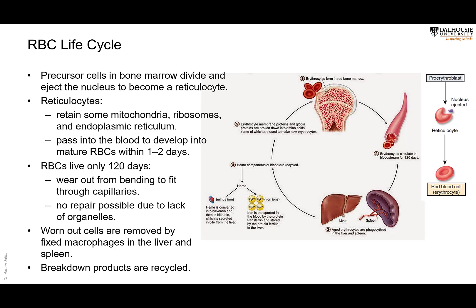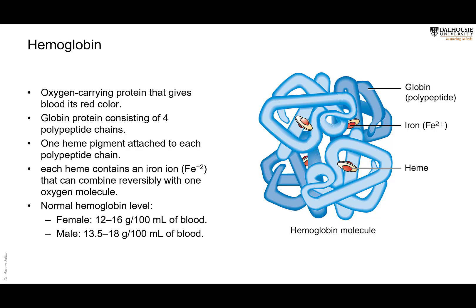The hemoglobin molecule consists of four polypeptide chains of globin — each a protein made of multiple amino acids. Each polypeptide chain has a heme pigment attached to it, and each heme contains one iron ion to which one oxygen molecule binds. Therefore, each hemoglobin molecule can carry four oxygen molecules.